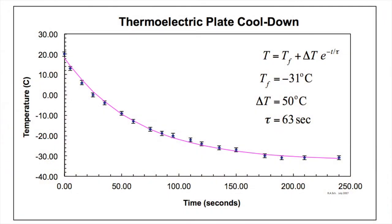Using a thermocouple to measure the temperature at the aluminum cooling plate, where normally the bottom of the chamber would sit, we can see here data showing a 50 degrees C temperature swing from room temperature down to minus 31 degrees C, with an exponential decay time, or cooling time, of 63 seconds.